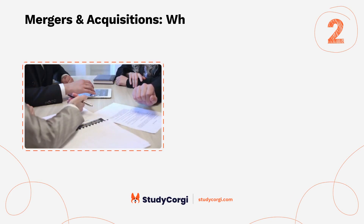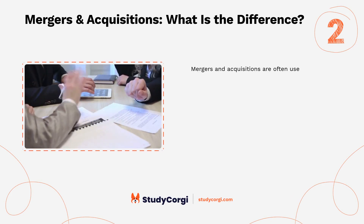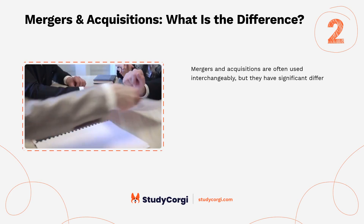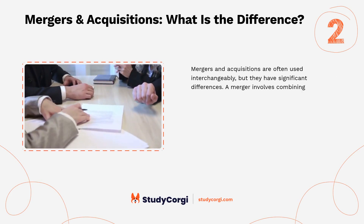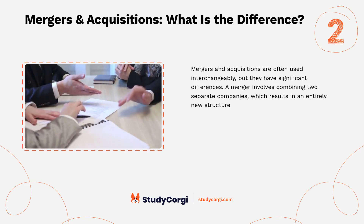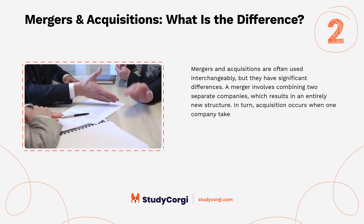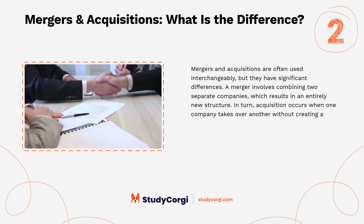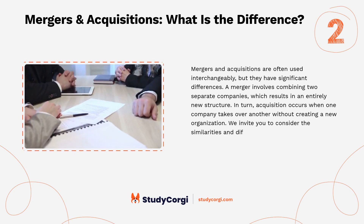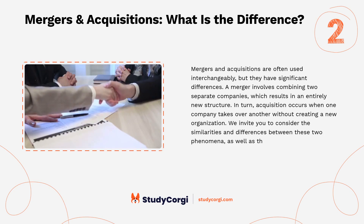Mergers and acquisitions: what is the difference? Mergers and acquisitions are often used interchangeably, but they have significant differences. A merger involves combining two separate companies, which results in an entirely new structure. In turn, an acquisition occurs when one company takes over another without creating a new organization. Consider the similarities and differences between these two phenomena, as well as the benefits of each.